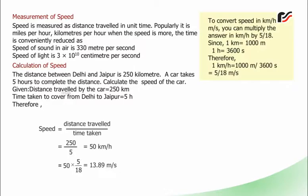To convert speed from kilometres per hour to metres per second, multiply by 5/18. Since 1 kilometre = 1000 metres and 1 hour = 3600 seconds, therefore 1 km/h = 1000/3600 m/s = 5/18 m/s.